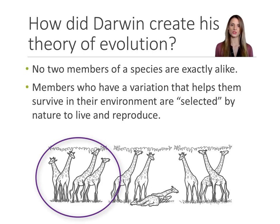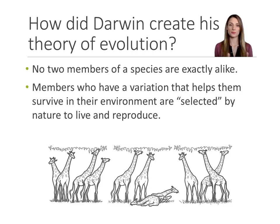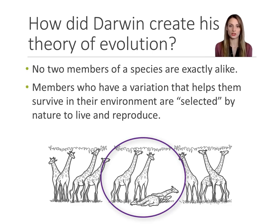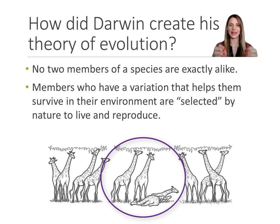In the leftmost example with the giraffe, you see four giraffes — they're all very different, different heights, different sizes. Pillar number two: members who have a variation, an adaptation that helps them survive in their environment are selected by nature to survive and reproduce. In the middle illustration, you see the two taller giraffes have been selected by nature because they're taller and able to reach the top of the trees for food. The two shorter giraffes have died because they don't have access to food.